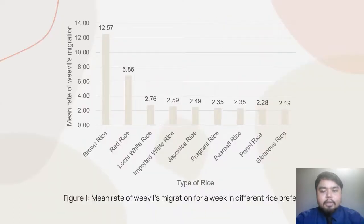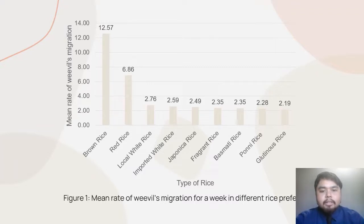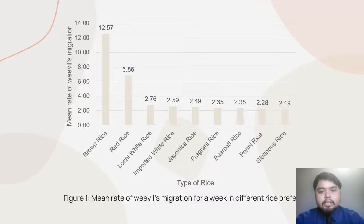As we can see in Figure 1, there is an upward trend in the rice weevil presence on brown rice. The rice weevils demonstrate a migration behavior toward brown rice. In the nine replicates, brown rice had the highest proportionality of rice weevils. The brown rice region is also the ideal location for male and female rice weevil mating. The second highest choice for the rice weevils was red rice. The rest of the rice types — local white rice, imported white rice, fragrant rice, basmati rice, pony rice, glutinous rice, and japonica rice — show consistency in the mean rate of weevil migration.